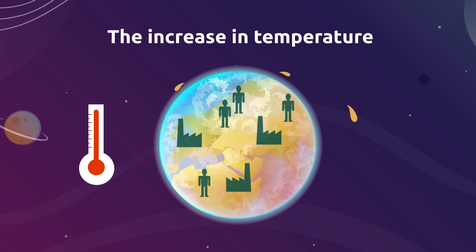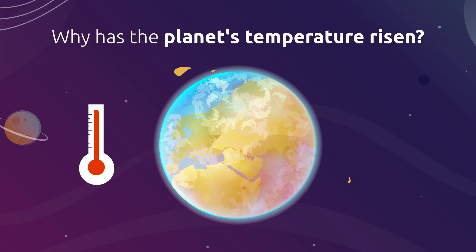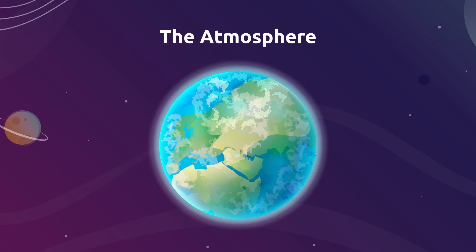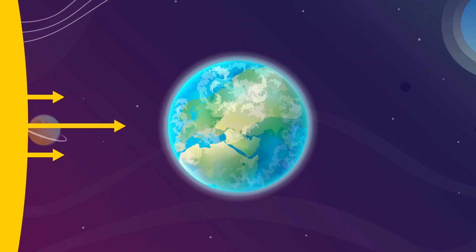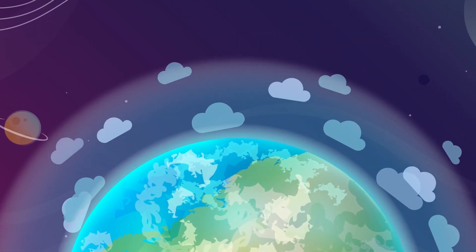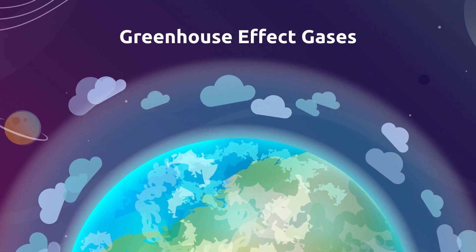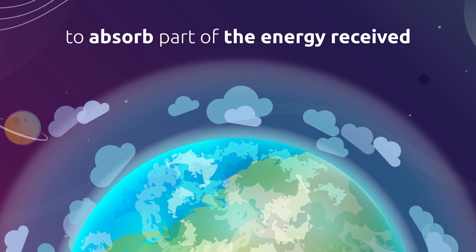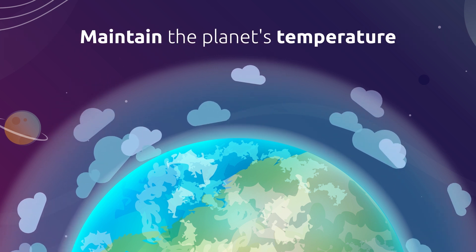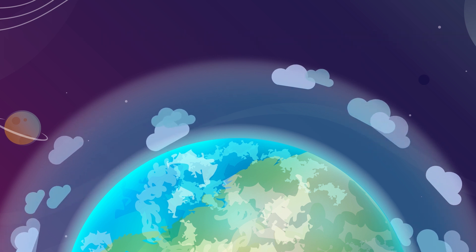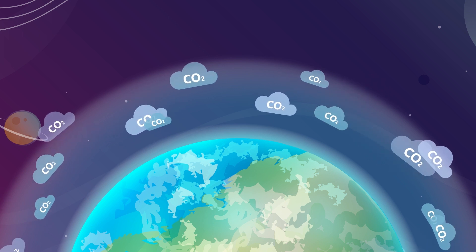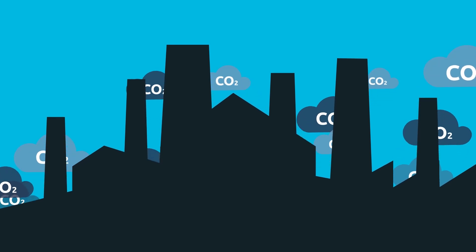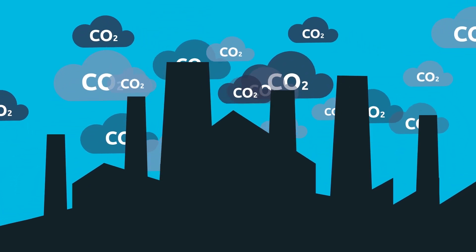But why has the planet's temperature risen? The earth is surrounded by the atmosphere, a thin layer of gas which allows part of the solar radiation to penetrate. This layer consists of gases called greenhouse effect gases, whose mission is to absorb part of the energy received and maintain the planet's temperature. One of the main greenhouse effect gases is CO2. With the industrial revolution, CO2 emissions started to increase owing to the use of fossil fuels like coal or petrol.